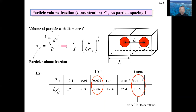What is more interesting is the case of a volume fraction of 1 ppm. 1 ppm is one millionth, regarded as extremely dilute. At 1 ppm, a 1 cm ball exists in an 80 cm cube — the volume of an 80 cm cube is a little larger than a home bus stop. Let's imagine that a 1 cm ball is in the bus stop of your house.